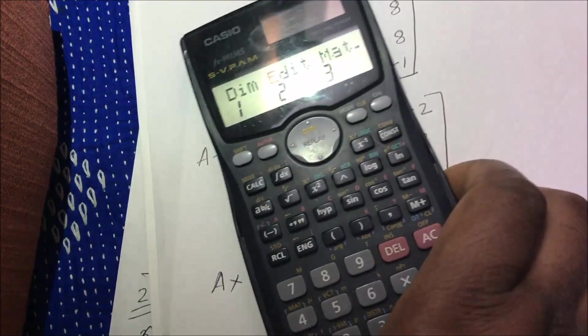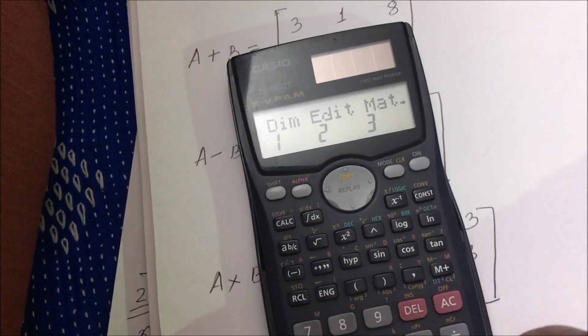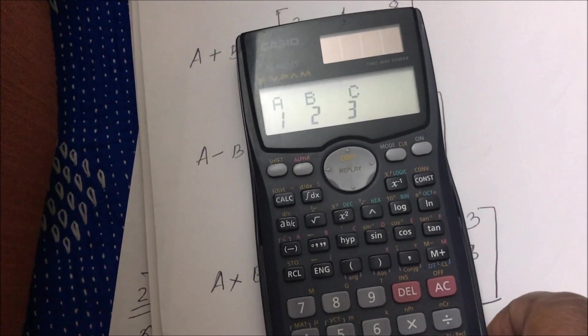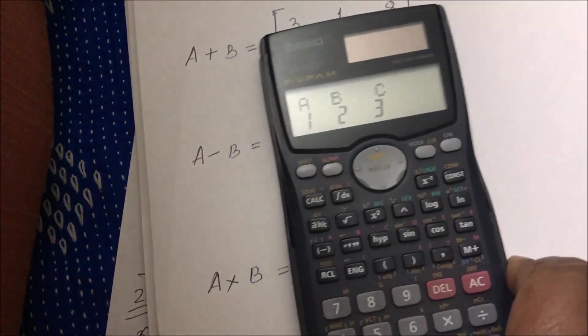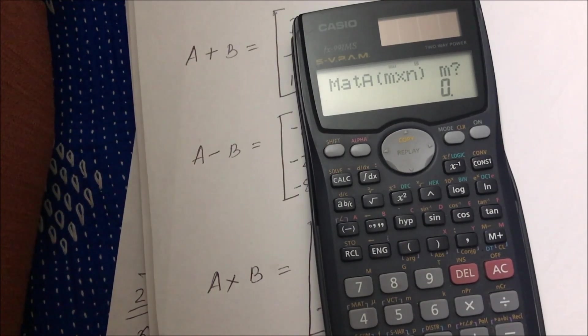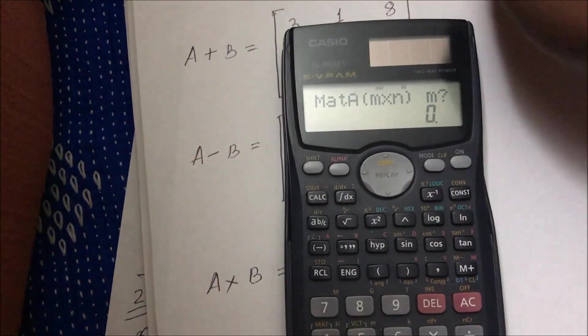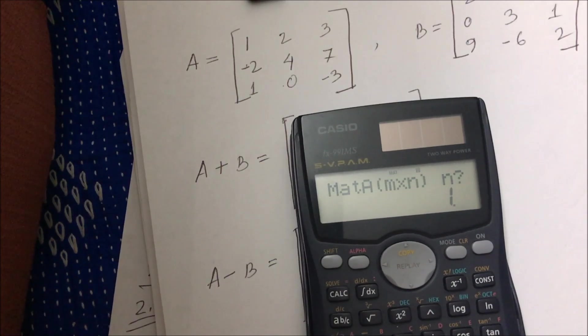Now you can see I have three modes: dimension, edit, and matrix. First of all, I have to press 1 for the matrix dimension. Before putting dimension, you can give the name of your matrix. Your first matrix, let's say A. Now they're asking you for dimension m cross n, that means row cross column. My matrix row number is 3, so I'm putting 3. Press equal and then they're asking for column number, which is n. Again, this is 3.